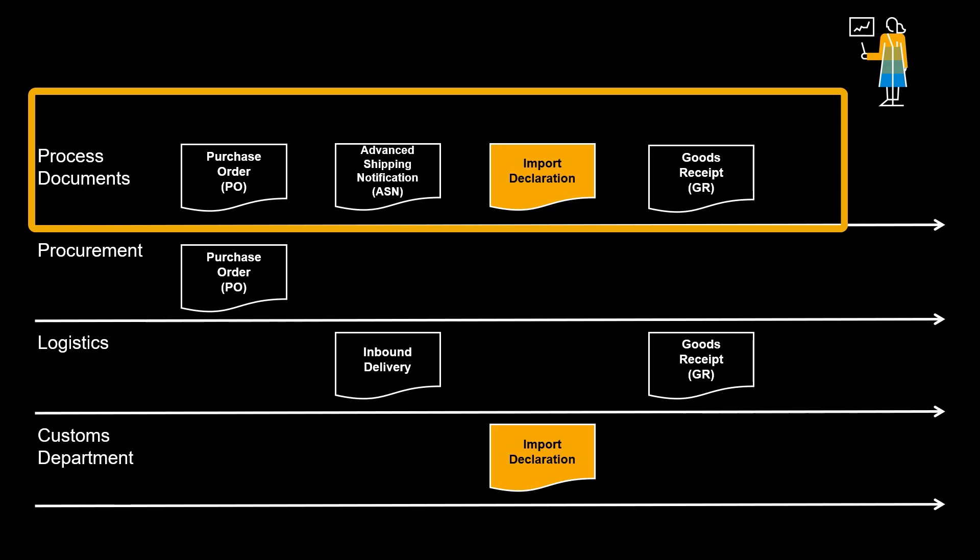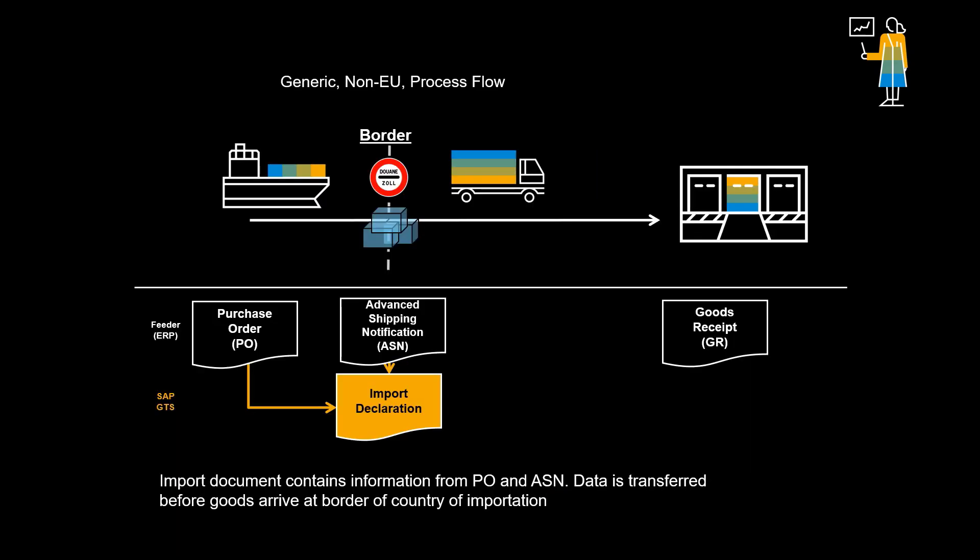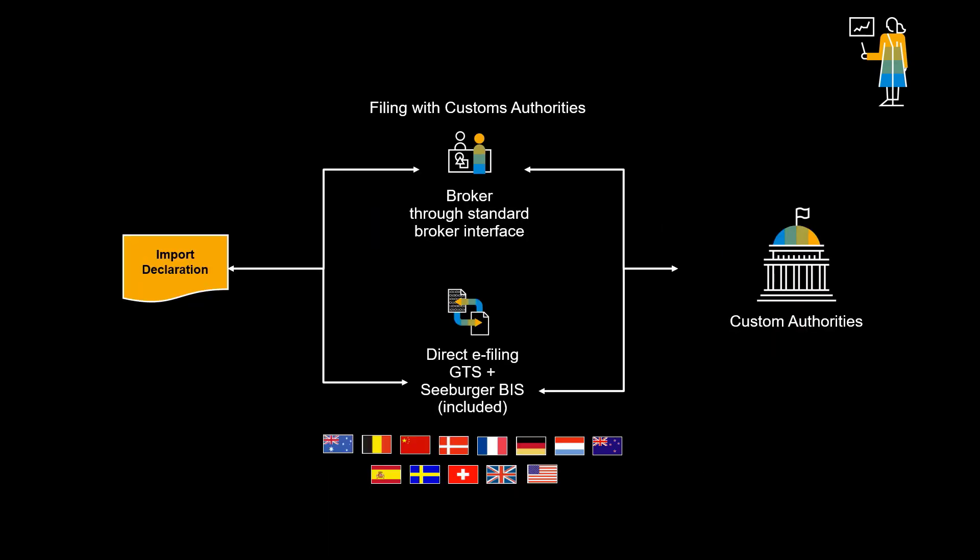In order to create an import declaration, different documents from the procurement process are used. These documents are generally cross-departmental. In our demo, we will do an import declaration before the receipt of the goods. We will see how the system utilizes information both from the original purchase order as well as the inbound delivery. The actual filing with customs authorities can be direct, like in our demo example, or alternatively through a generic broker interface.